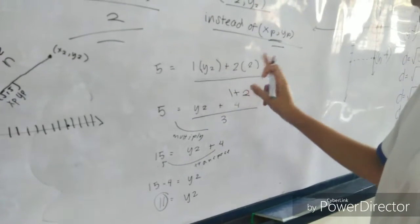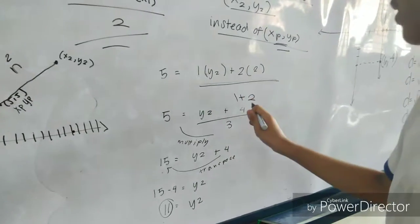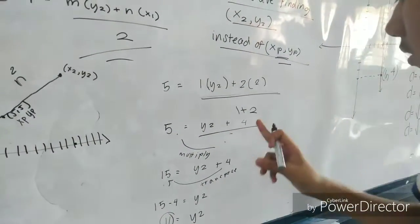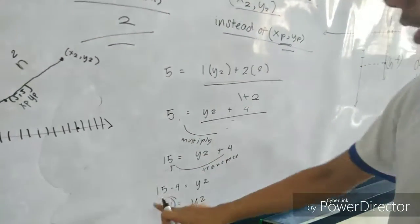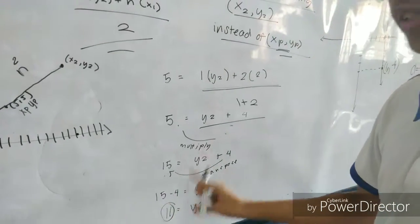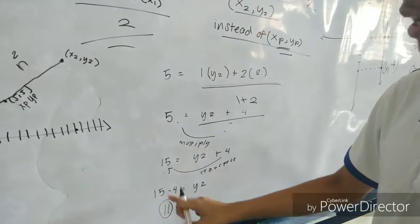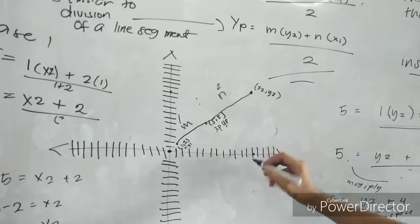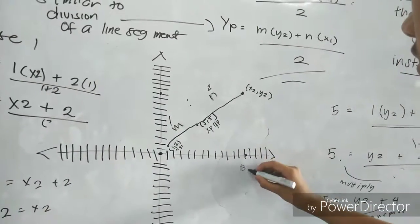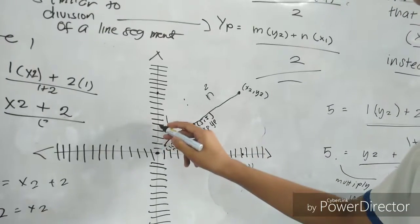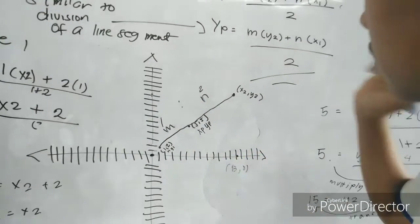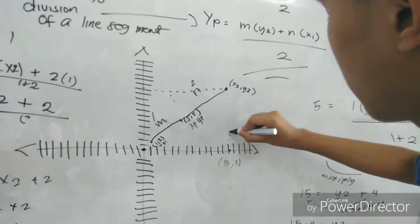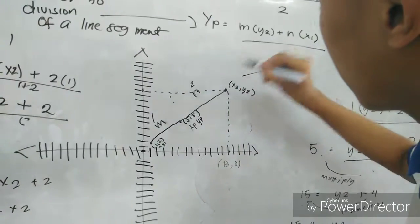For Y₂, we have 5 = (1·Y₂ + 2×2)/(1 + 2), which gives 5 = (Y₂ + 4)/3. Multiplying both sides by 3, we get 15 = Y₂ + 4. Transposing 4 to the other side, Y₂ = 15 − 4 = 11. So our Y₂ is 11. When we plot these two points, our prediction was pretty close to the result of our equation.